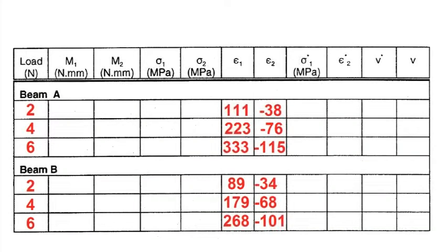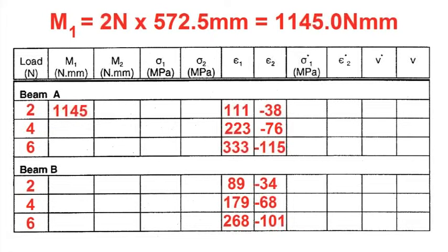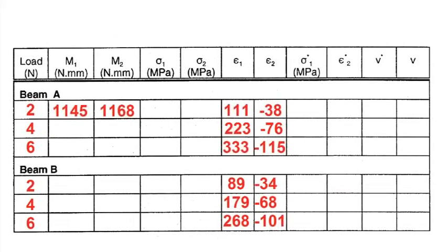For each material and beam, calculate the following. First, calculate the bending moments applied at each strain gauge for each test. M1 corresponds to the moment at the longitudinal strain gauge, which is equal to the load applied, which varies from two newtons to six newtons, times L1.